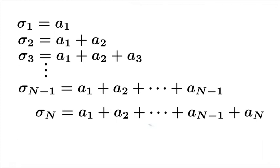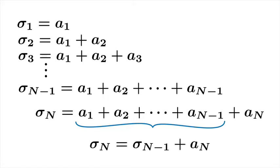We'll notice that buried within the nth partial sum is, of course, the n-1th partial sum. So σ_n = σ_{n-1} + a_n.